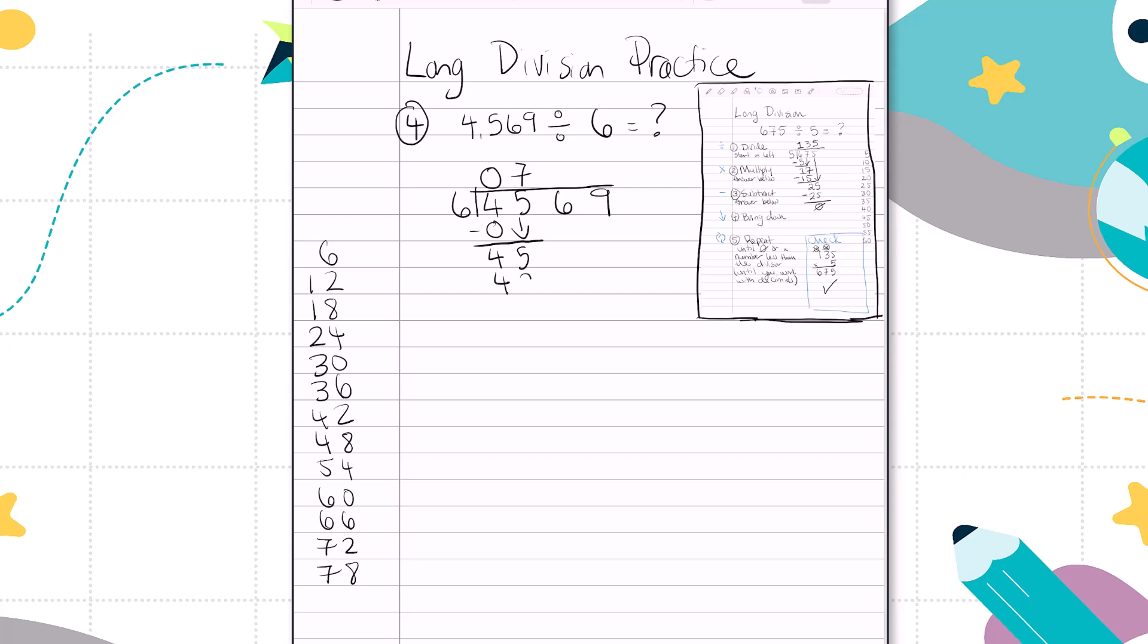Just counting to make sure I was accurate there. 7 times 6 is 42. 45 minus 42 is 3. Bring down our next digit, which is 6. And then let's see how many steps it takes. Oh, it would be 6. And then we're going to bring down our last digit, which is 9. And I know that there's only one 6 in 9 with 3 left over. That means 4569 divided by 6 is 761 remainder 3.